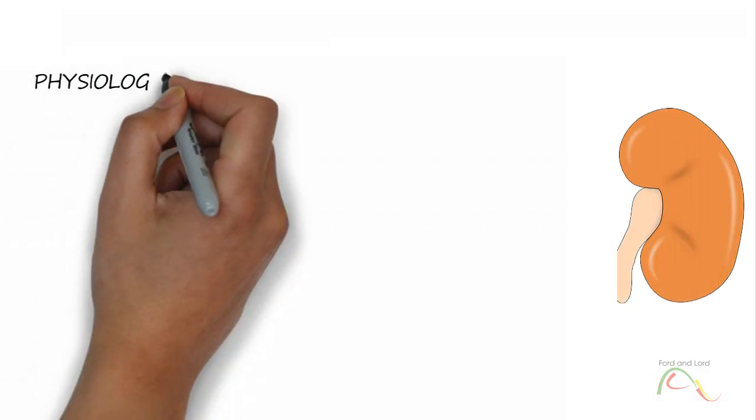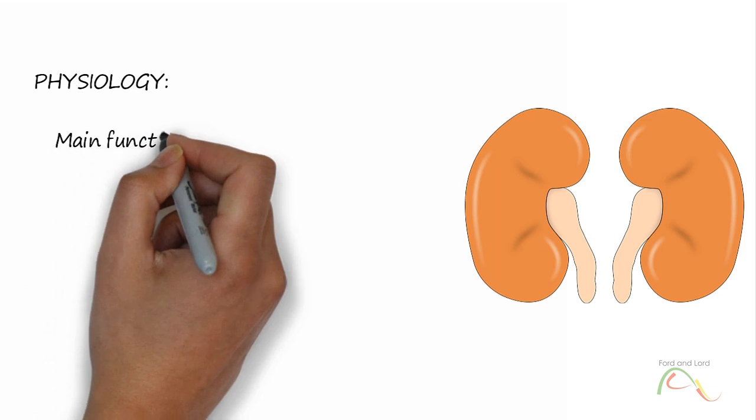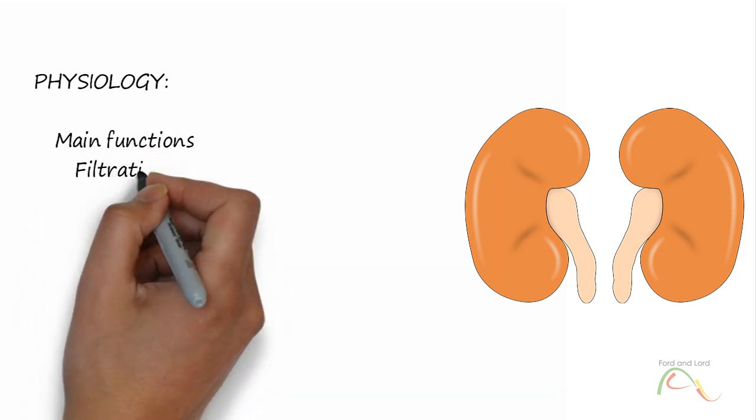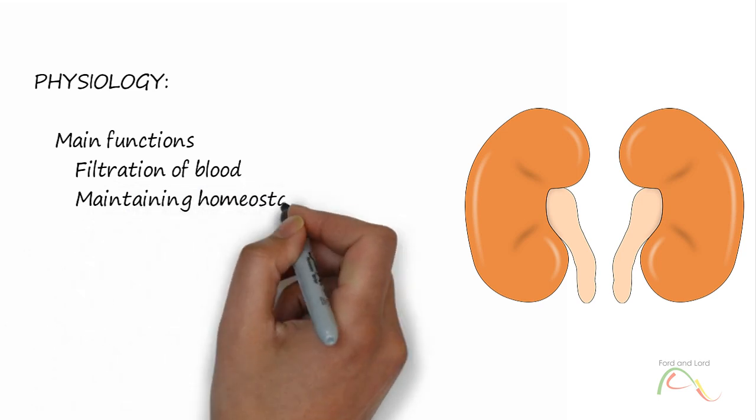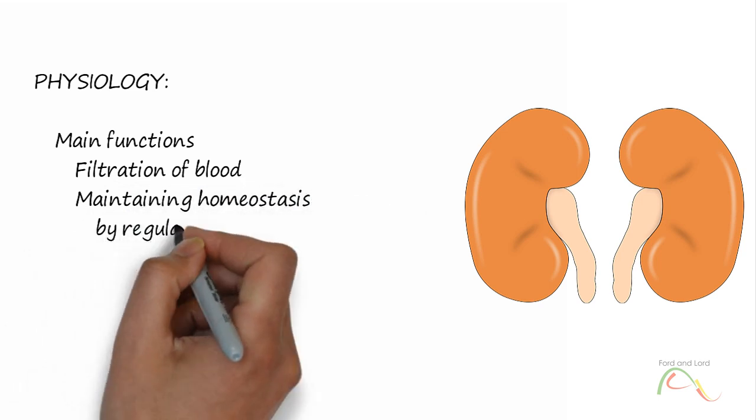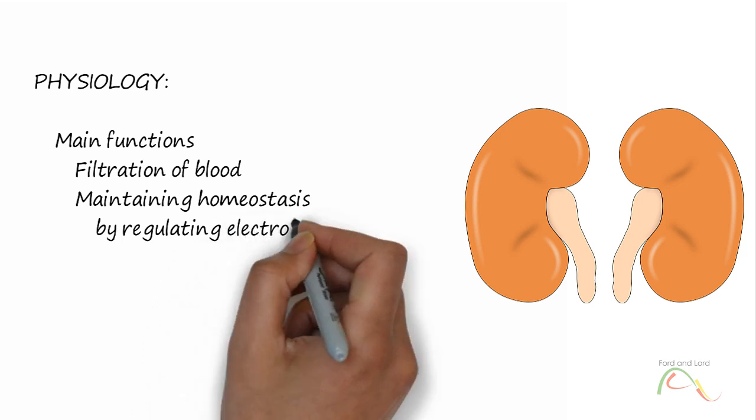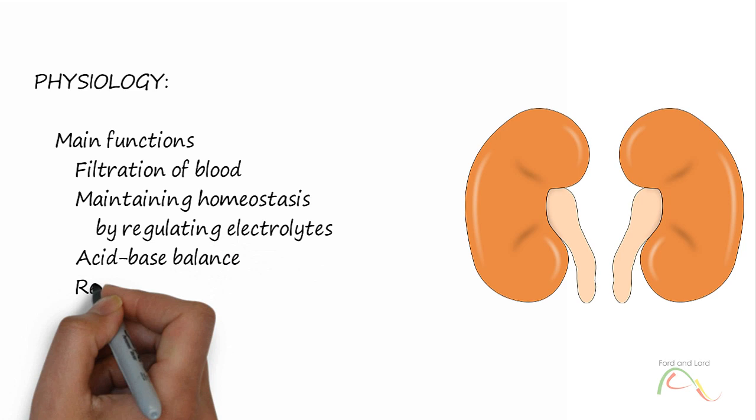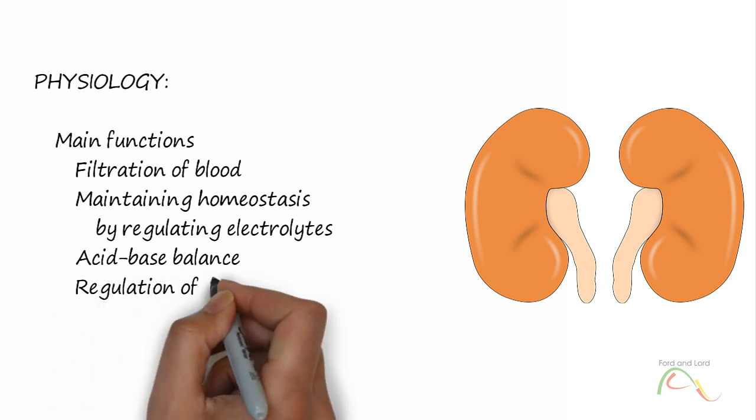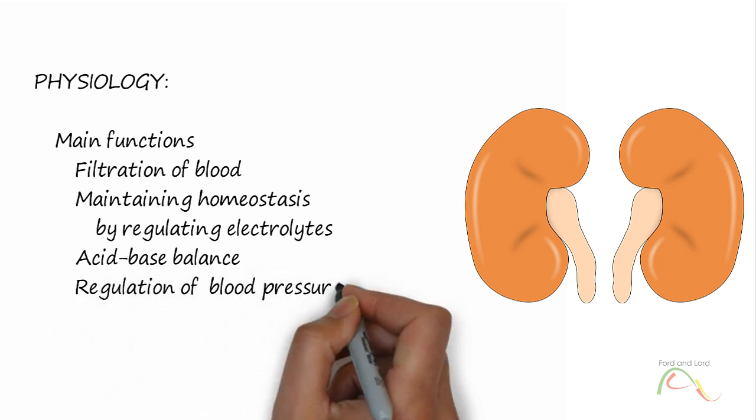Physiology. The kidneys are the main organs of the renal system. Their main function is filtration of blood to remove nitrogenous waste products that are excreted through the urine. Kidneys also play a pivotal role in maintaining homeostasis by regulating electrolytes and maintaining acid-base balance. They also regulate blood pressure by maintaining salt and water balance.